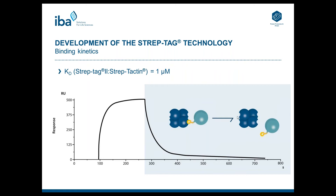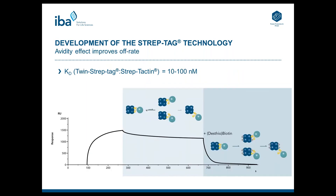Due to the tetrameric nature of Streptactin, another idea was to make use of an avidity effect. For this, two StrepTech 2 sequences were linked with each other. The transient release of a single site doesn't allow the protein to diffuse away, so binding will be reinstated on the Streptactin, and the equilibrium of this interaction is shifted to the bound confirmation. The avidity effect improves the off-rate but without hampering the elution in a competitive manner by addition of desthiobiotin or biotin.